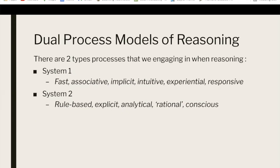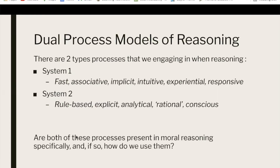Dual process theories of reasoning have been well theorized about across a variety of different epistemological domains, so much so that there are efforts to identify the consistencies between them. These theories typically identify two contrasting types of reasoning: one that's characteristically fast — system one — and one that's slow — system two. Properties of system one processing include heuristic processing that's associative, implicit, intuitive, experiential, automatic, and tacit. System two processing is more rule-based, rational, conscious, and controlled. Less work, however, has been done to extrapolate normative conclusions from these epistemological claims.